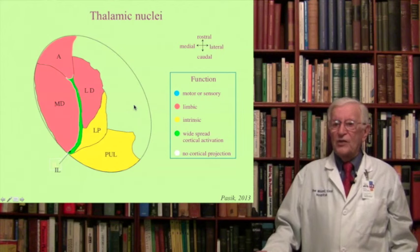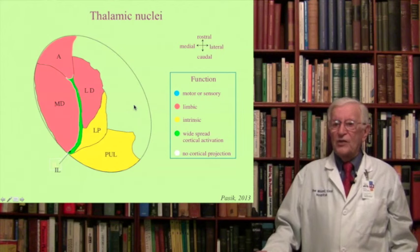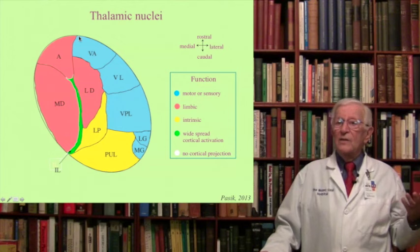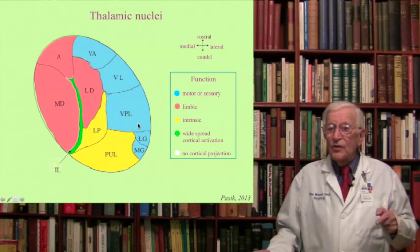The ventral nuclei include VA and VL, which are motor, and then VPL and VPM — along with the geniculate nuclei, both lateral and medial — which are of sensory nature.